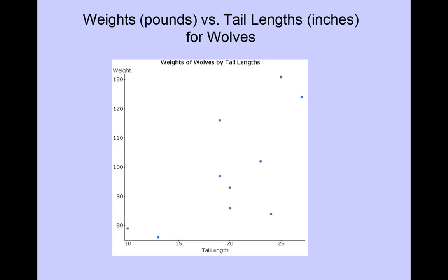Weights in pounds and tail lengths in inches for wolves was gathered. This is what the scatter plot looks like. You'll notice the blue dots are the ordered pairs of observations. In these types of graphs you want to look for general trends.